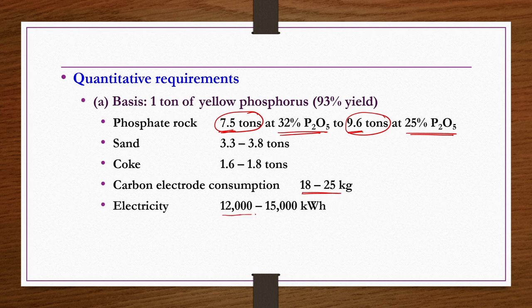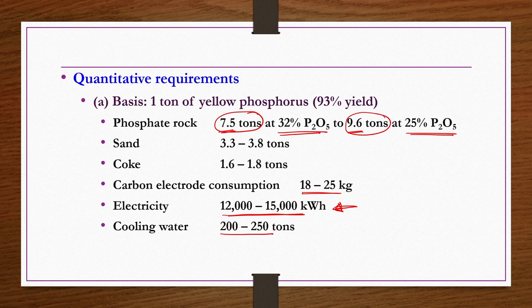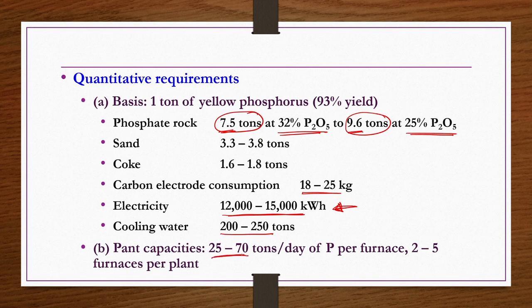Electricity requirement is high since the electric furnace maintains temperatures around 1400 to 1500°C. Cooling water required is 200 to 250 tons. Plant capacity per furnace is 25 to 70 tons per day of phosphorus, and 2 to 5 furnaces per plant are possible depending on plant capacity.